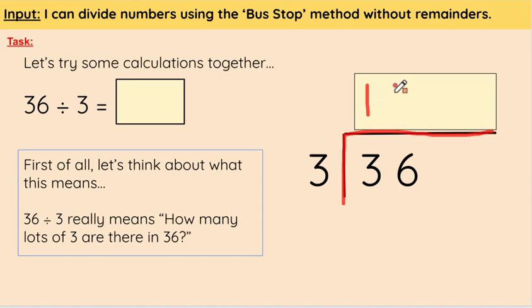So then we've solved it, as easy as that. We have 12. Here is our answer. So again, what this really means is there are 12 lots of 3 in 36. So 36 divided by 3 equals 12.